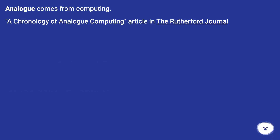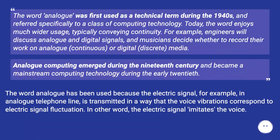Analog comes from computing. According to a chronology of analog computing published in the Rutherford Journal, the word analog was first used as a technical term during the 1940s and referred specifically to a class of computing technology. Today, the word enjoys much wider usage, typically conveying continuity.